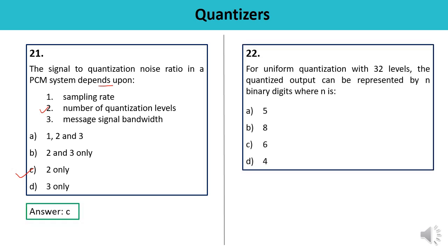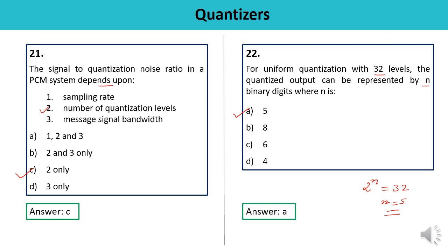Question 22: For uniform quantization with 32 levels, the quantized output can be represented by n binary digits. What is n? Using 2^n = 32, we get n = 5. The answer is A.